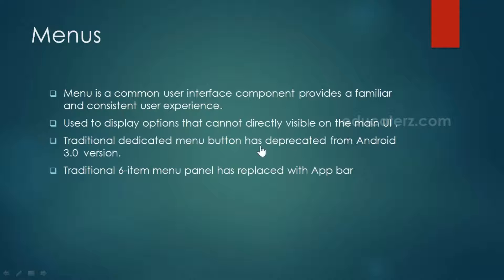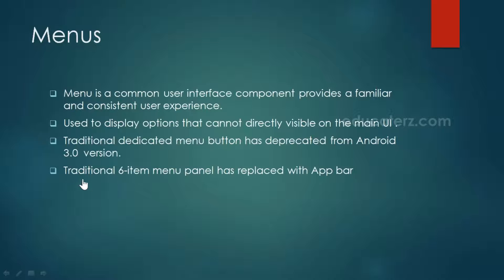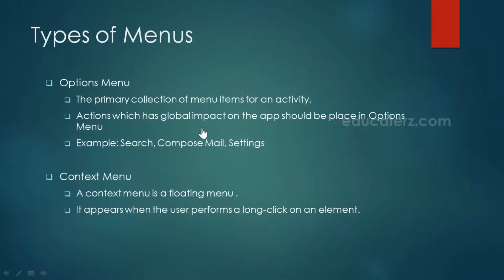From Android 3.0 onwards there is no menu button in Android. To be frank, except Samsung, no other phone has a menu button nowadays. Samsung follows their own structure. That button at the bottom center is called the D-pad. After that, the six-item menu has also been deprecated and replaced with the app bar.